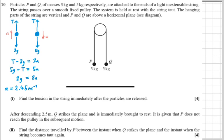And if we substitute that back into here, you get T equals 3 lots of that plus 3G, 3 times 9.8. And that gives us 36.75 Newtons. Great. That's part one.